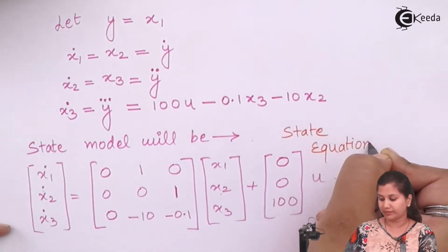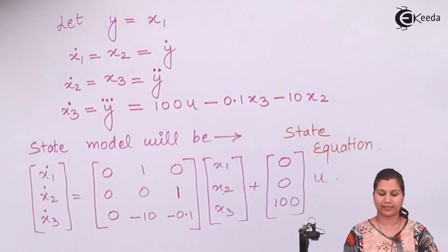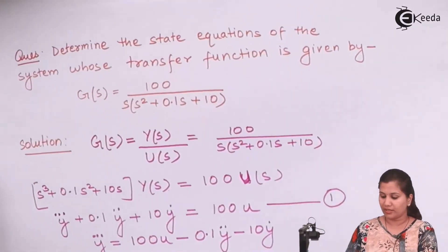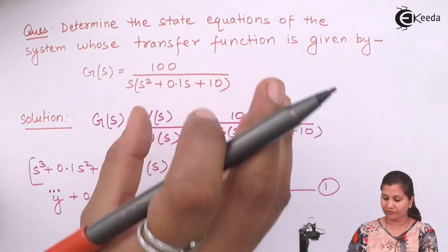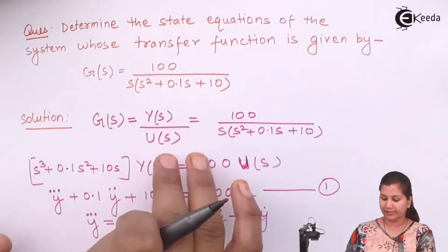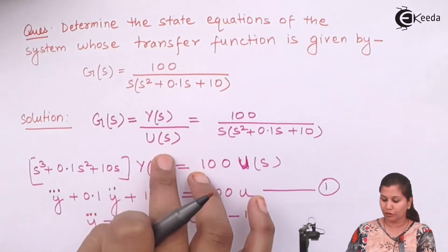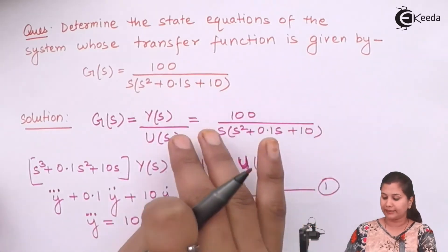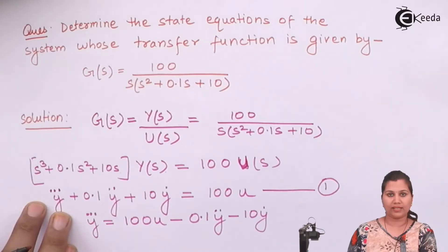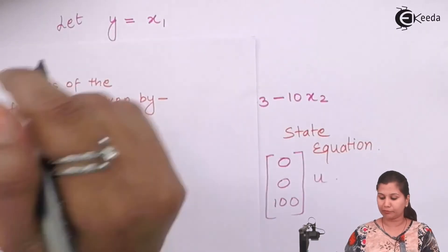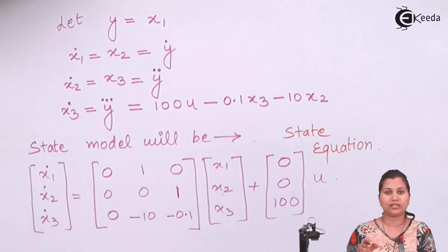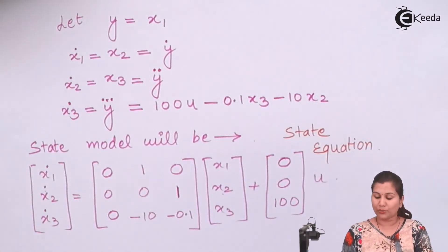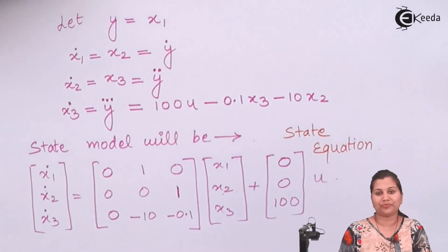These two equations together form the state model of the system. We were given the transfer function and had to determine the state equations. We wrote the transfer function as the ratio of Laplace transforms, cross multiplied, took the inverse Laplace transform, assumed state variables with Y = X1, and derived the full state model. I hope you are now able to solve these kinds of problems. Thank you.